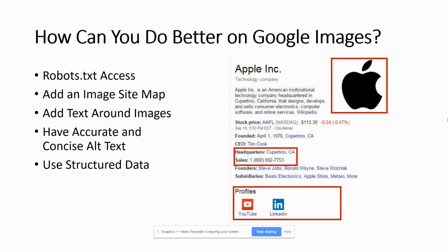Using structured data is also important. This is actually an example of organizational schema. The logo here is an image — you can add images to different parts of your schema markup. Specifically in image search, you can do it for products and recipes. But you also want to make sure that you're marking up your images and adding them to organizational and local schema as well, because this can make sure that your images are showing up not just in image search, but also in the knowledge cards that can be found on Google today.